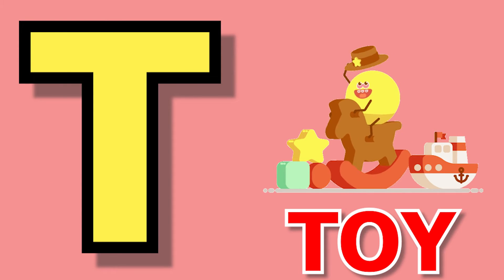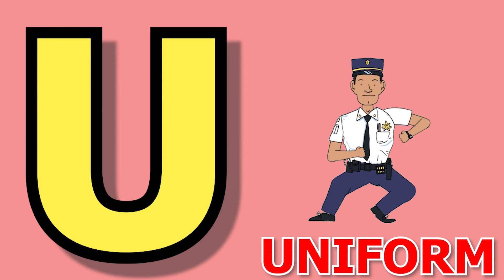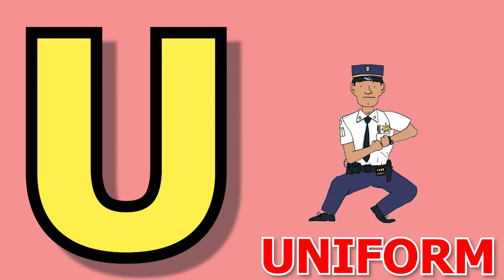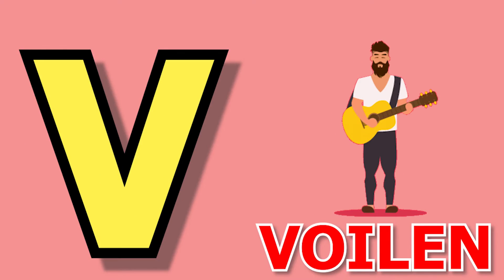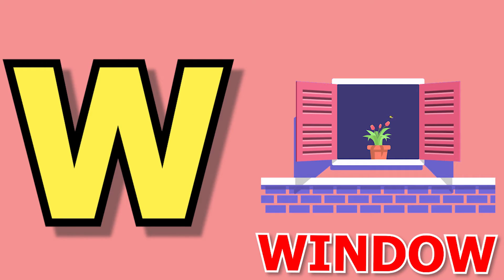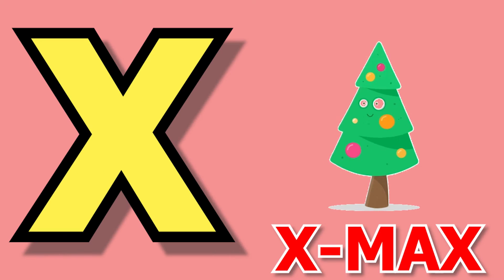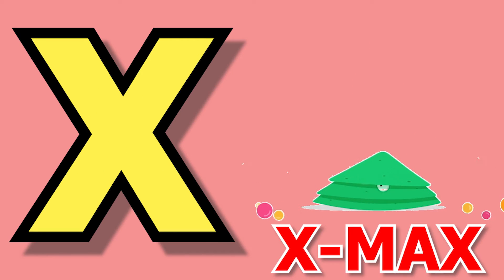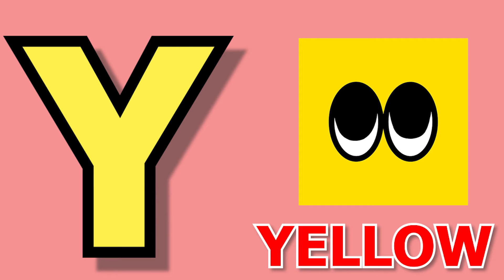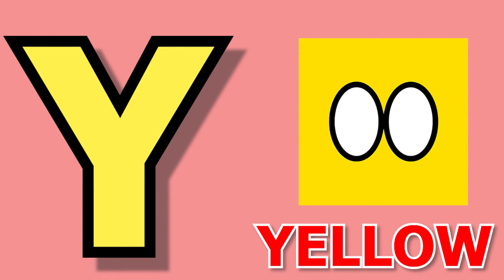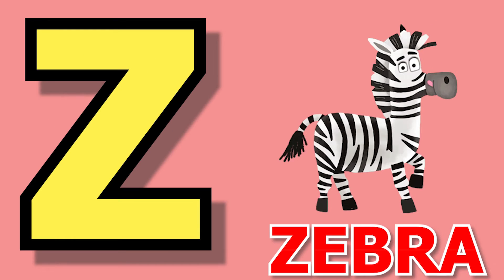E for toy, U for uniform, B for boy, W for window, X for x-max, Y for yellow, Z for zebra.